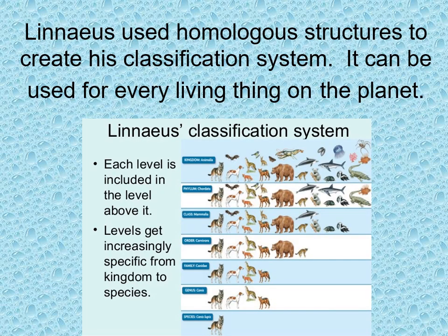In this system, Linnaeus used homologous structures to create his classification system. In this slide, I have an example of the classification system for wolves. Linnaeus created a system that can be used for every living thing on the planet.